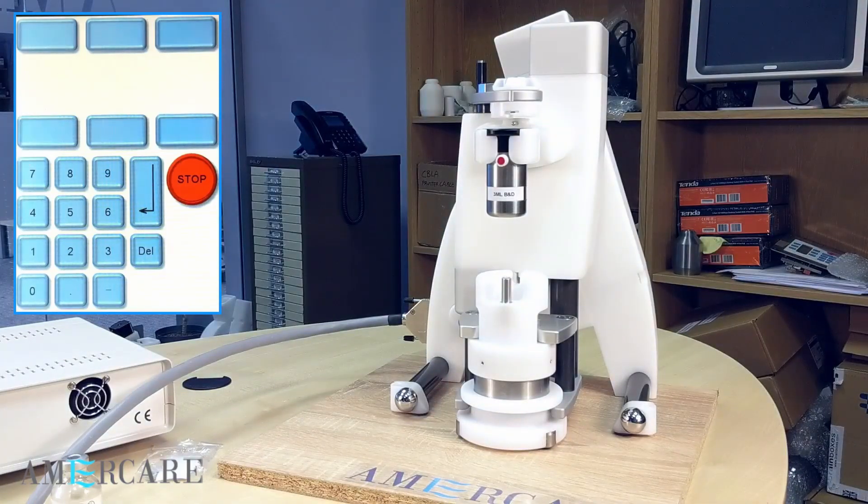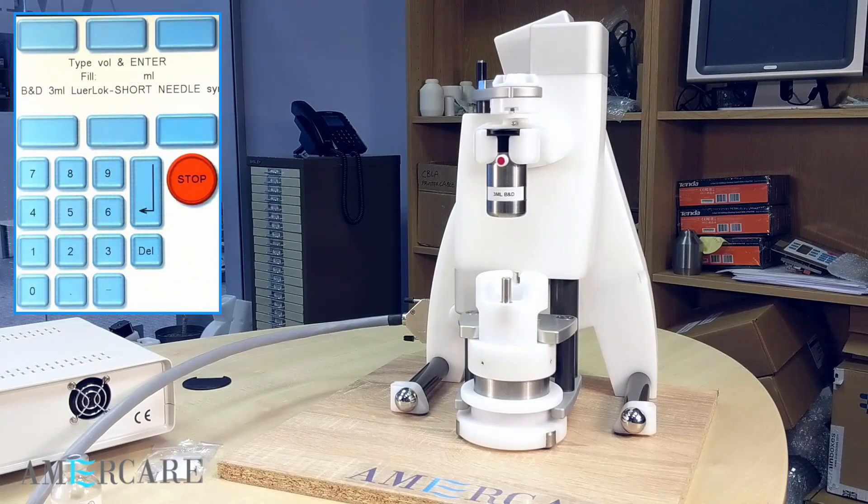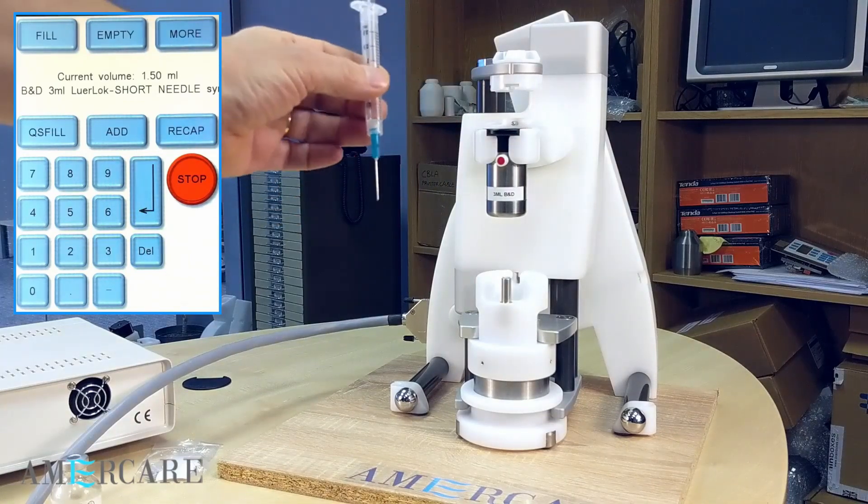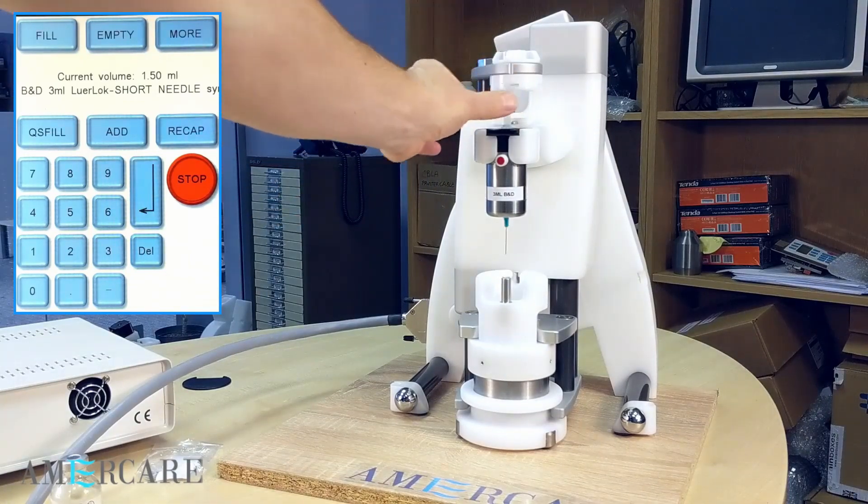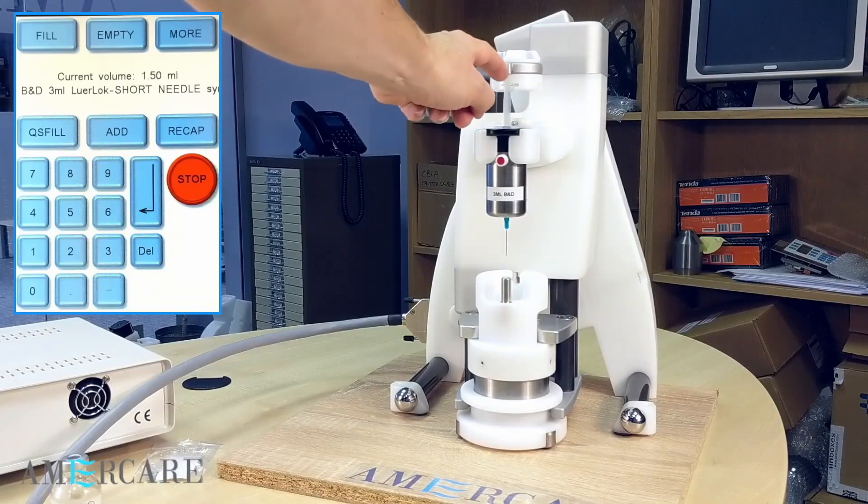Press QS fill. Enter the pre-filled volume, 1.5 milliliters and press enter. The plunger will now move to the correct position to accept the pre-filled syringe. Drop the syringe into the shield. You can now use the add function as before.